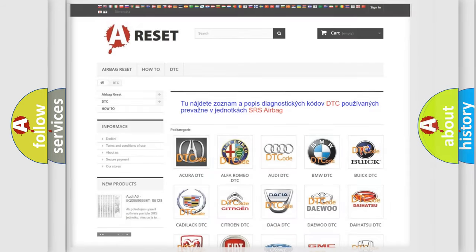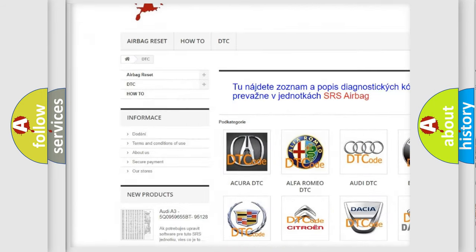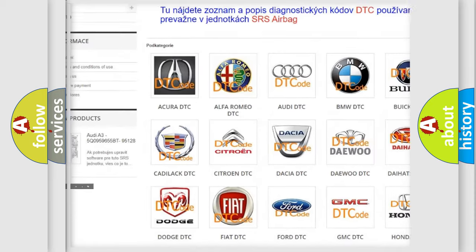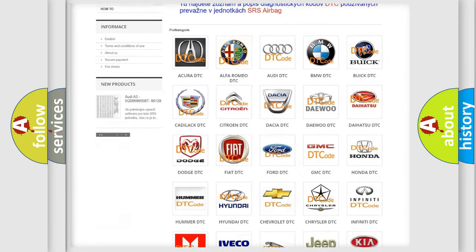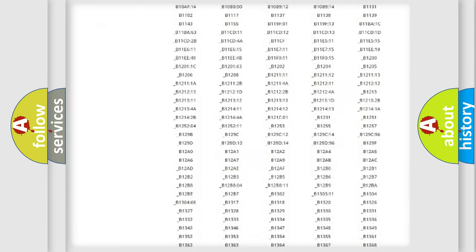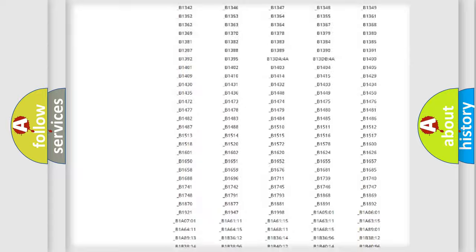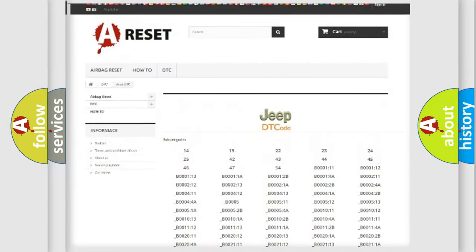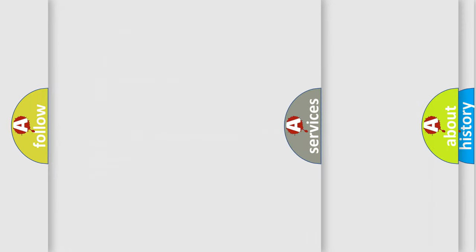Our website airbagreset.sk produces useful videos for you. You do not have to go through the OBD2 protocol anymore to know how to troubleshoot any car breakdown. You will find all the diagnostic codes that can be diagnosed in Jeep vehicles, and also many other useful things.